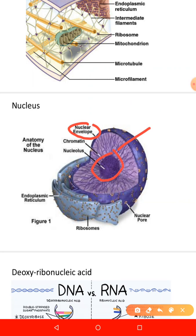The nuclear membrane, or nuclear envelope, is double-layered and porous, allowing the nucleoplasm to communicate with the cytoplasm. The nucleoplasm is a viscous fluid that forms the ground substance of the nucleus, similar to the cytoplasm. It surrounds the chromatin and nucleolus. Chromatin consists of thread-like materials made up of large molecules of DNA, compactly packed with the help of specialized proteins called histones.